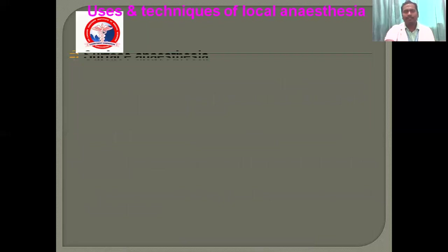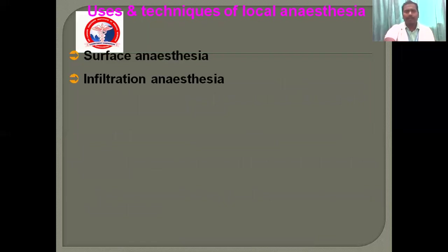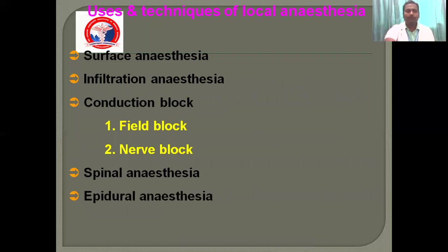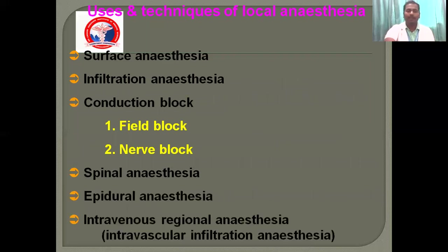Uses and techniques of local anaesthesia: it can be used as surface anaesthesia, infiltration anaesthesia, and conduction blocks. Conduction blocks can be subdivided into field blocks and nerve blocks. Regional blocks include epidural anaesthesia, spinal anaesthesia, and intravenous regional anaesthesia.